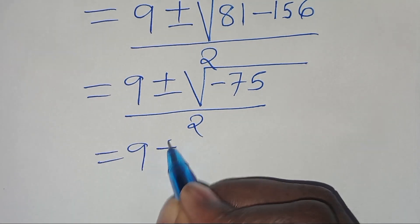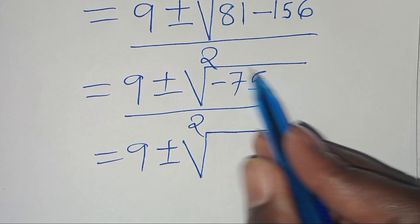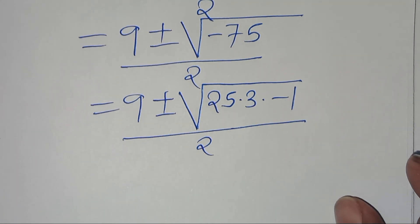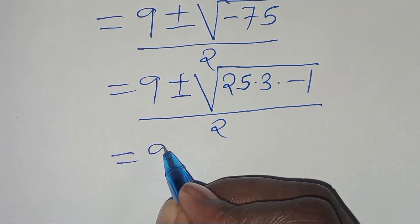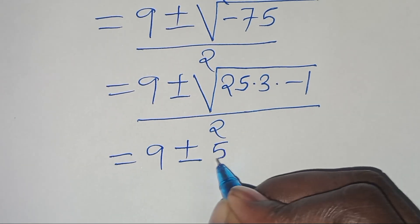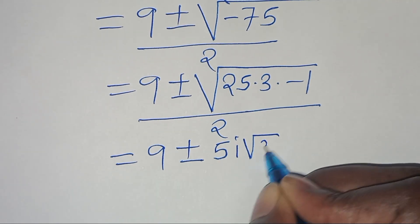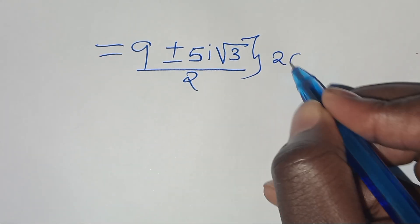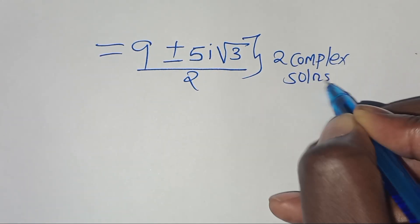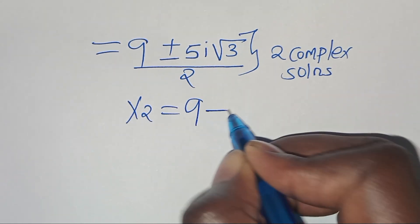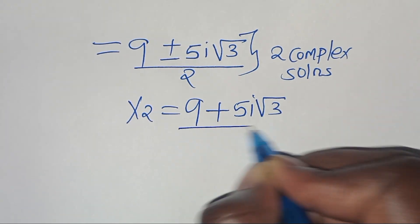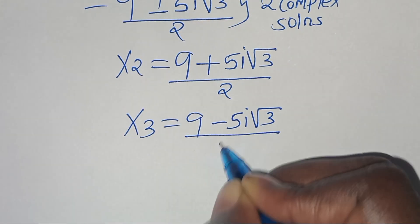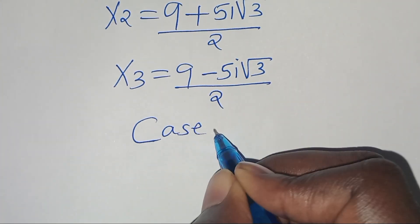We express the square root of minus 75 as the square root of 25 times 3 times minus 1, which gives 5i√3. So x₂ equals (9 plus 5i√3) over 2 and x₃ equals (9 minus 5i√3) over 2. These are two complex solutions from Case 1.